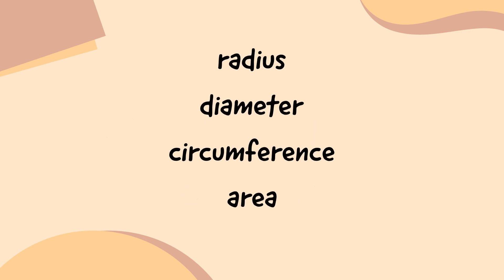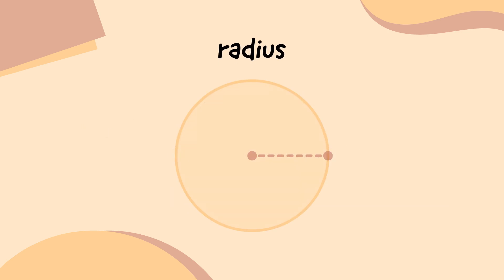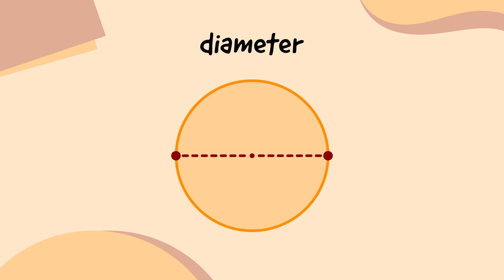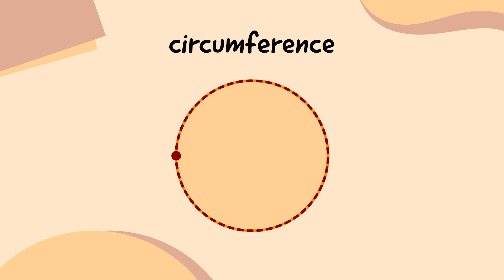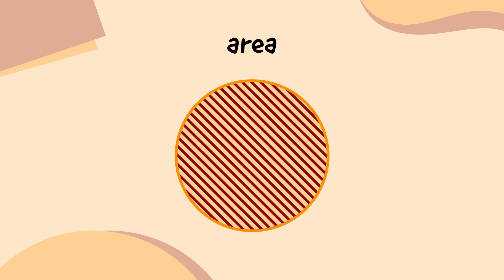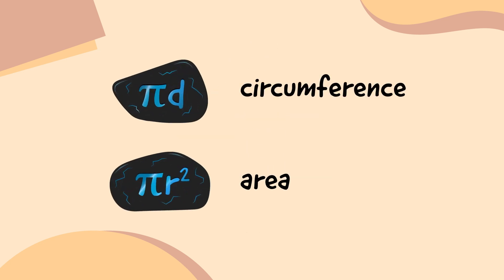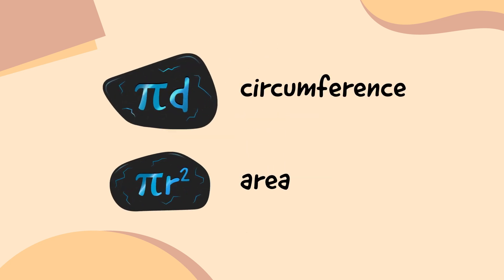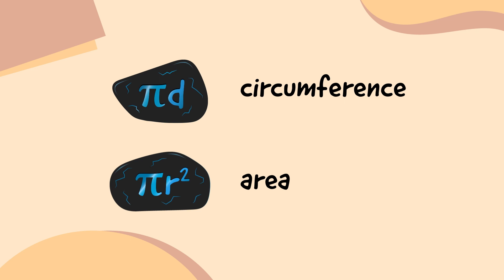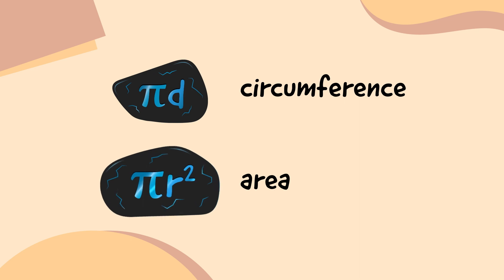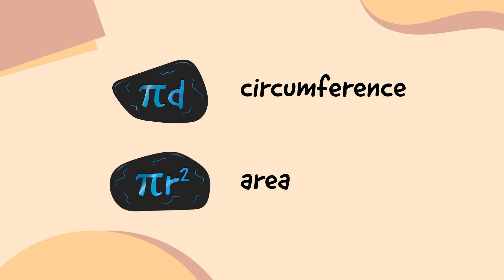So in our previous adventure, I learned that a circle has a radius, a diameter, a circumference and an area. The circumference is equal to pi multiplied by the diameter, or pi d.